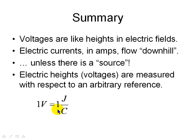1 volt is 1 joule per Coulomb. 1 amp is 1 Coulomb per second.